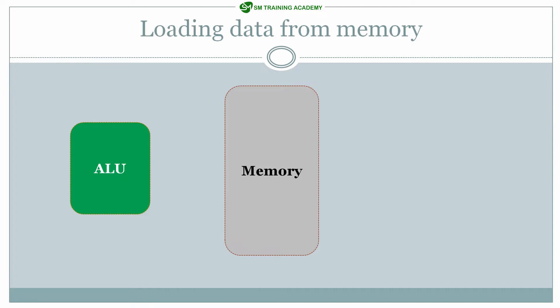In modern day processors, if you want to load some data from the memory block of the processor, it cannot be directly loaded from memory to the ALU unit. This is because if there is any misbehavior in the ALU process, any power failure, or any flaws in the program, there is a high possibility of memory being corrupted directly, since the memory is directly read from the memory block and processed in the ALU unit.